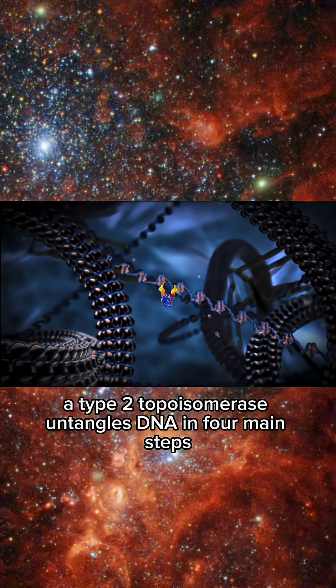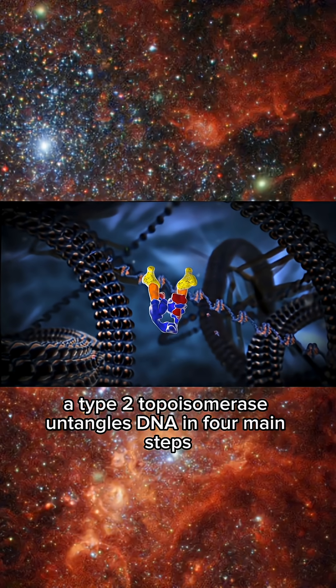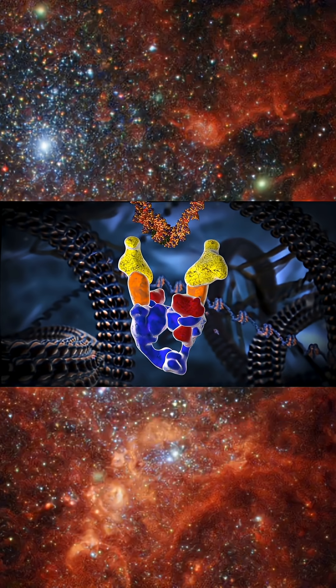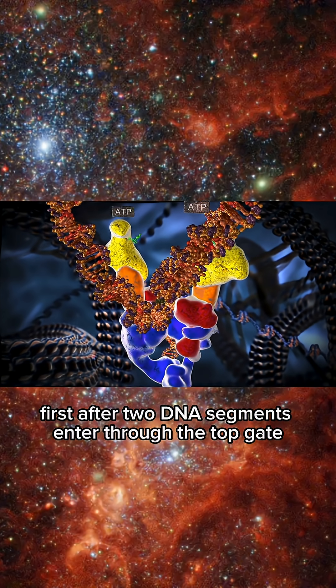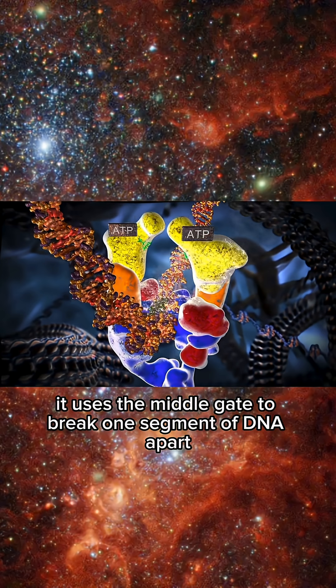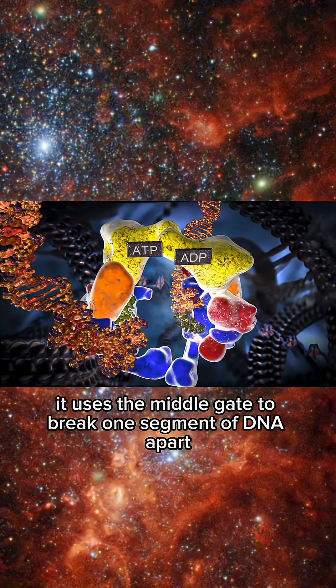A type 2 topoisomerase untangles DNA in four main steps. First, after two DNA segments enter through the top gate, it uses the middle gate to break one segment of DNA apart.